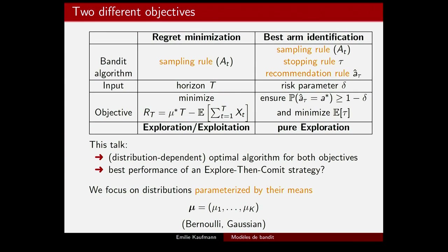This motivates the two bandit problems considered today. The first is regret minimization: build a sampling rule such that, given horizon t, the goal is to minimize regret up to that horizon. The second is a best arm identification problem: I introduce a stopping rule to randomly stop the experiment when I think I have identified the best arm, and then propose a recommendation a-hat. Given a risk parameter delta, the goal is to ensure the recommendation is correct with probability at least 1 - delta, while minimizing the expected number of samples needed — the expected number of patients involved in the trial. This is one example of a pure exploration problem.